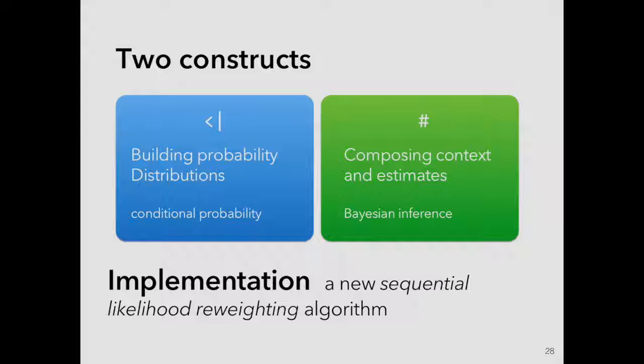So now, in this case, you can write essentially in two slides of code. And I'm just showing you one of the slides. Something that samples from the nearby roads. And then you can say, my new location is my GPS likelihood smashed together with my road. And now that pops me back on the road.